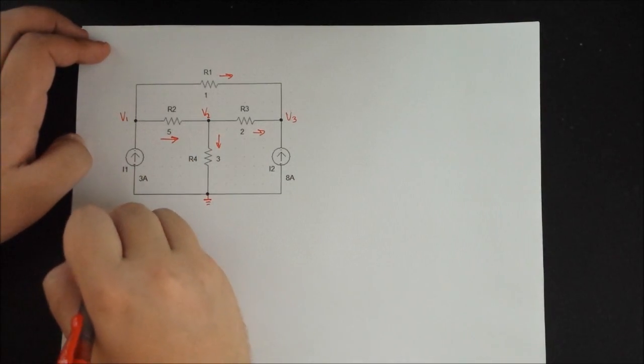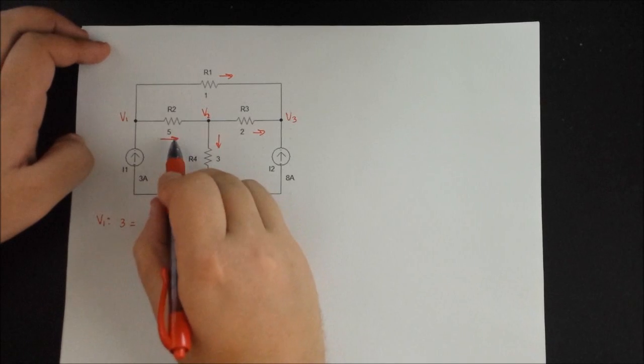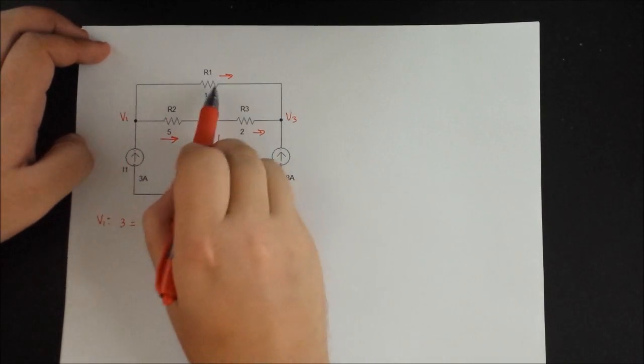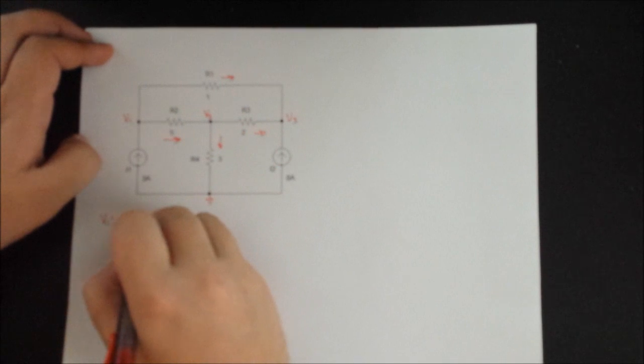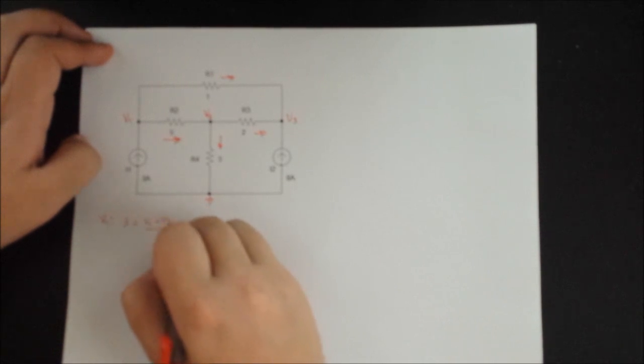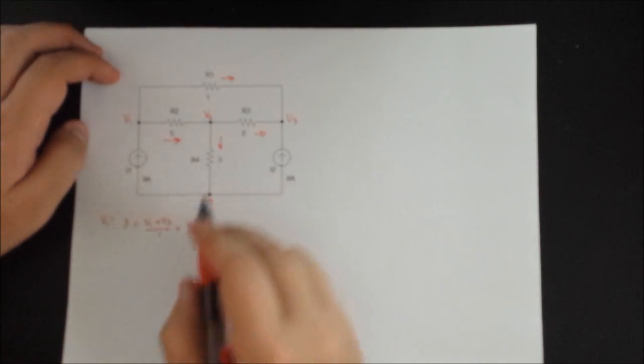So at V1 we have one current that's coming in, so that's 3. And you have two of them that are coming out. So the top one is going to be V1 minus V3 divided by the resistance. So we're going to write that down, V1 minus V3 divided by 1, plus we have a second current which is V1 minus V2 divided by 5. And that's all we have.